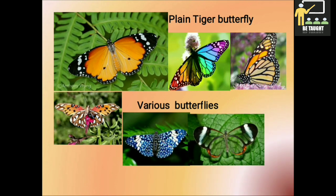Do you know, children? For each type of butterfly, the type of plants on whose leaves its female will lay eggs is fixed. The time the larvae take to emerge from the eggs is different for different types of butterflies. There is great variety in caterpillars — different types are of different colors, their body is long, and many types of caterpillars are hairy. Here we see the picture of a plain tiger butterfly and various colorful and beautiful butterflies.